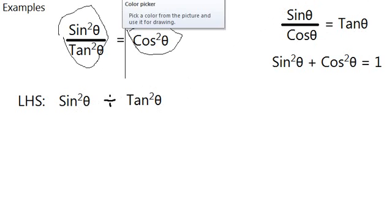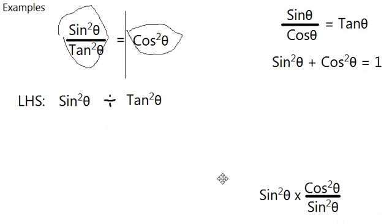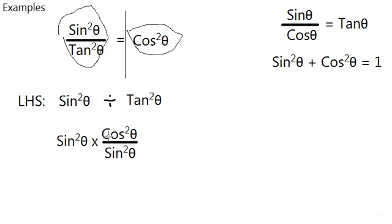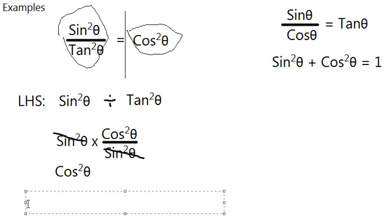In identities, we know that tangent square theta is tangent theta squared, and tangent theta squared can be written as sine square theta over cosine square theta, given that this is true. And so we can rearrange this whole thing to become sine square theta times cosine square theta over sine square theta, and who knows, these two cancel out, and what you're left with is cosine square theta, or RHS.